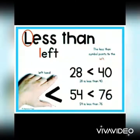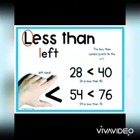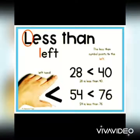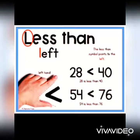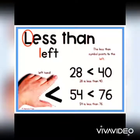Now less than — less than means smaller. The less than symbol points to the left. Example: 28 and 40 — 28 is less than 40, so we will use the less than symbol, the left hand concept. Next example: 54 and 76 — 54 is less than 76, so we will use the less than symbol.